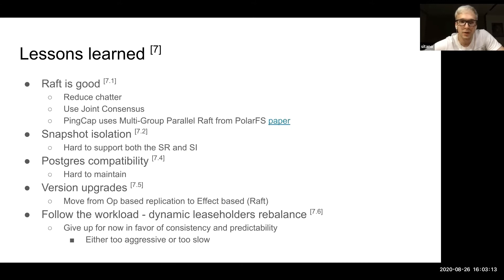The lessons learned are that Raft is good and there are a lot of possible optimizations to Raft. They reduced Raft chatter, and they implemented joint consensus. They say that everyone must use joint consensus. It's not much harder to implement than the default algorithm. Also you can take a look at what PingCAP uses in their database with Raft. They implemented the parallel Raft paper ideas.